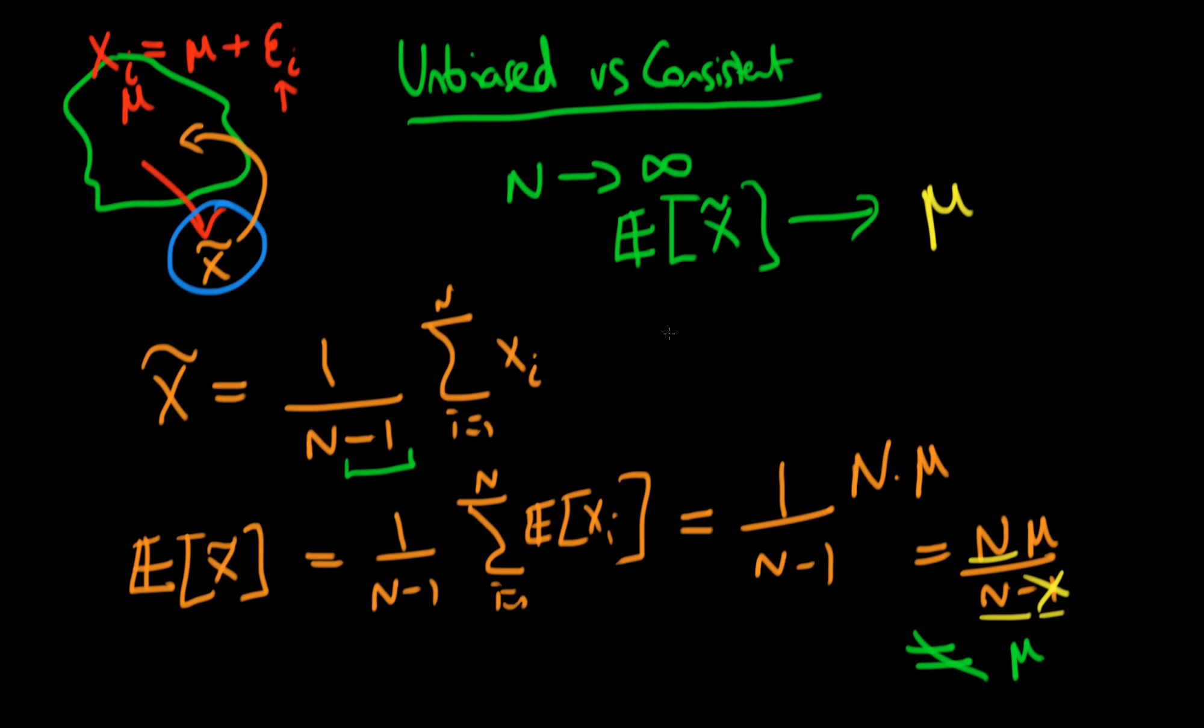So even though I had a biased estimator of the population mean mu, I actually have a consistent estimator for the population mean mu.